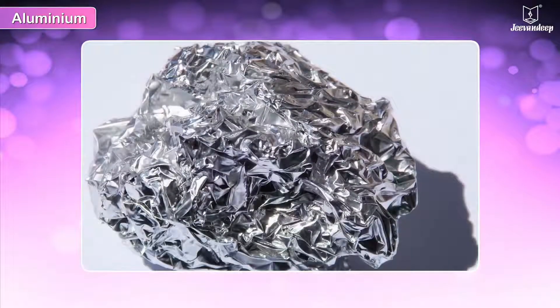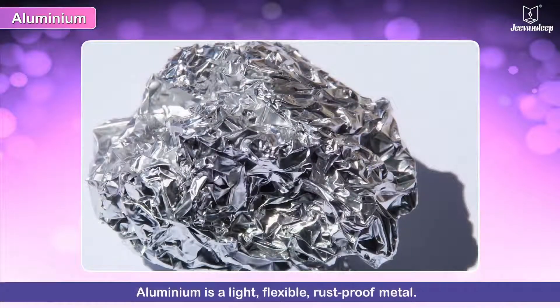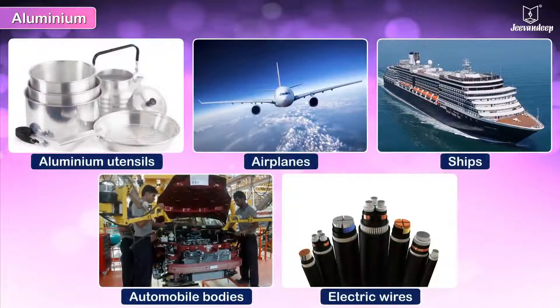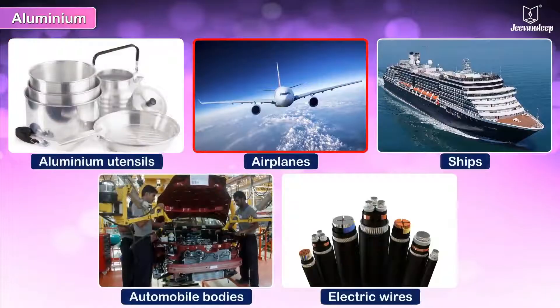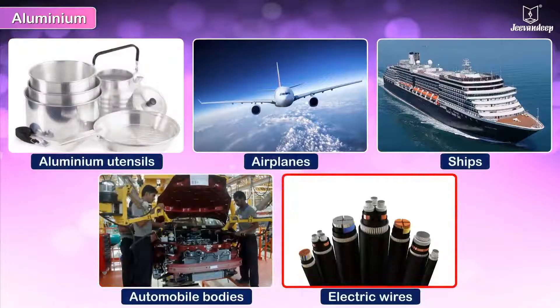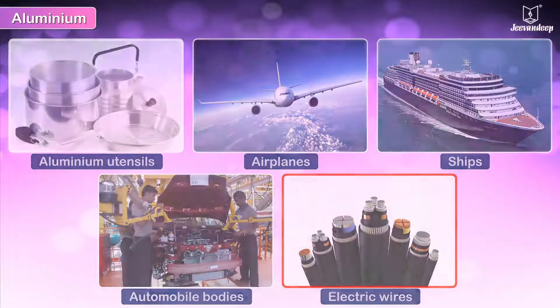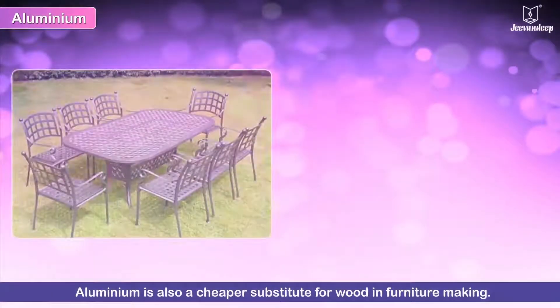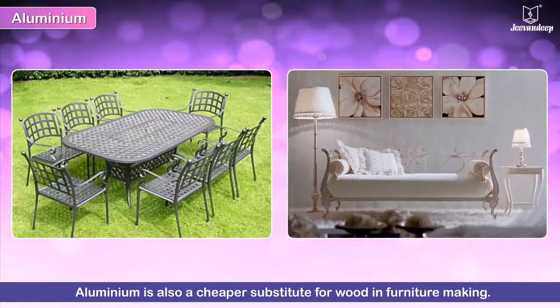Aluminium is a light, flexible, rust-proof metal. It is used in the manufacture of utensils, airplanes, ships, automobile bodies, and electric wires. Aluminium is also a cheaper substitute for wood in furniture making.